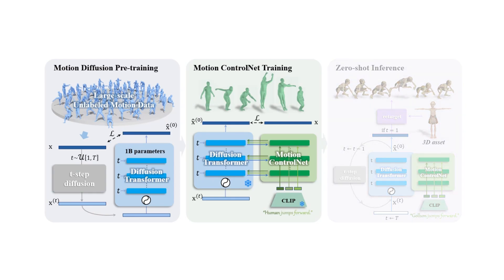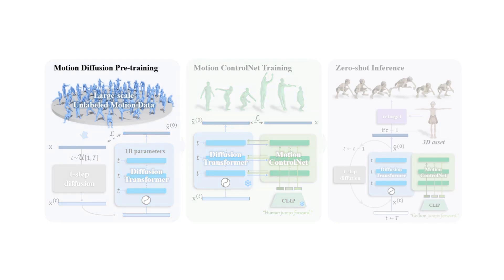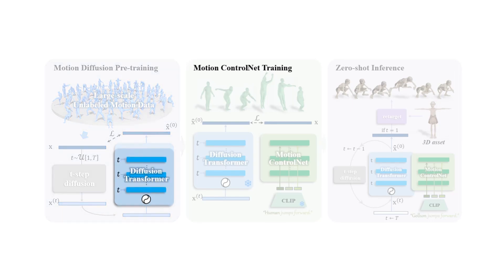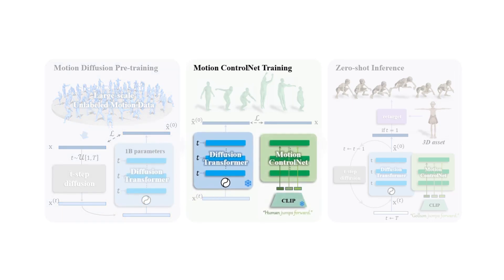We carefully tailor the pre-train then fine-tune paradigm into the text-to-motion generation. First, we leverage large-scale unlabeled motion data to pre-train an unconditional diffusion model with up to 1 billion parameters. Then we freeze the pre-trained model and adopt a conditional fine-tuning scheme called Motion ControlNet to condition it on the text embeddings of the CLIP text encoder.